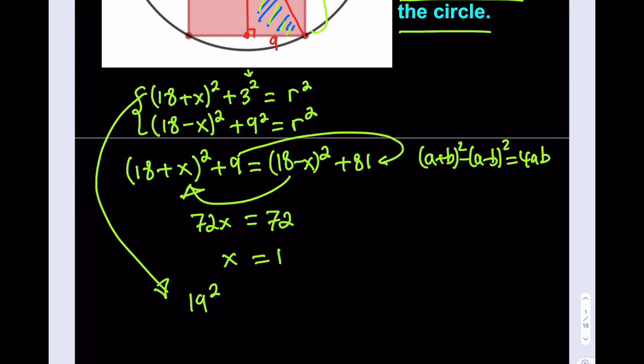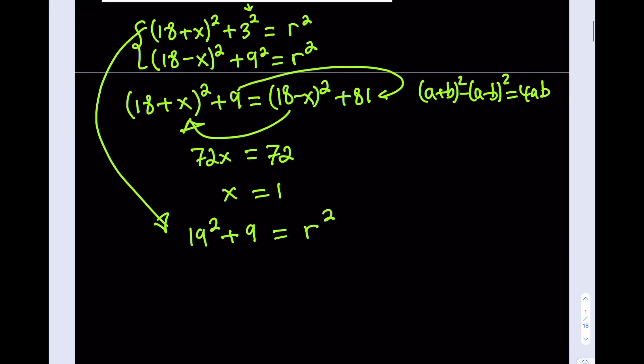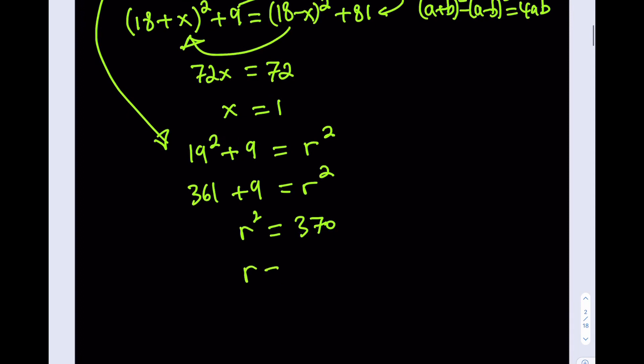3 squared is 9 and that should equal R squared. What is 19 squared? You have to have it memorized because it comes up a lot. It's good to know squares at least all the way up to maybe 25. 19 squared is 361. So when I add the 9, it becomes 370. Then R squared is equal to 370 from which R equals square root of 370.